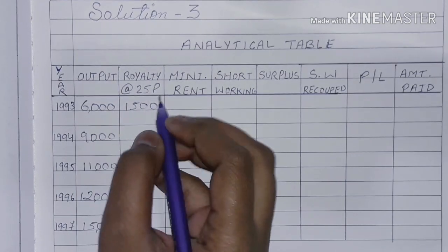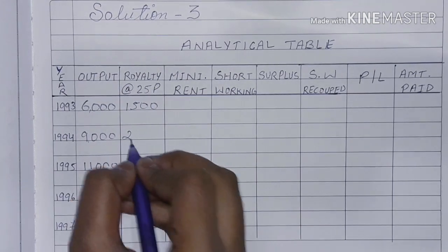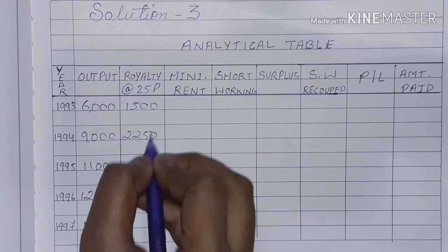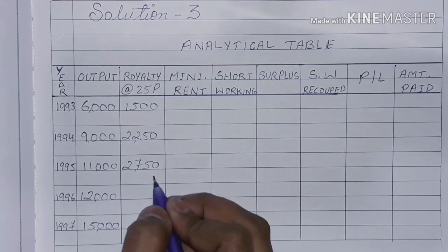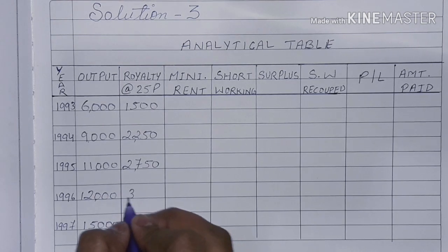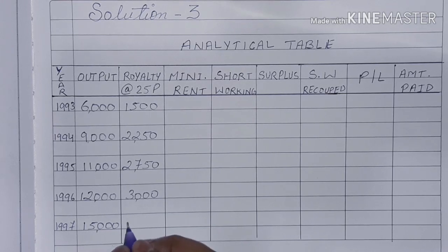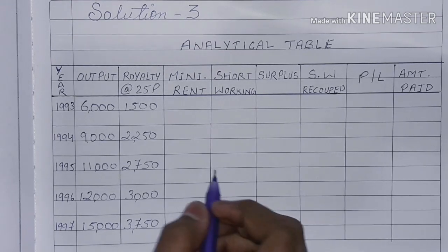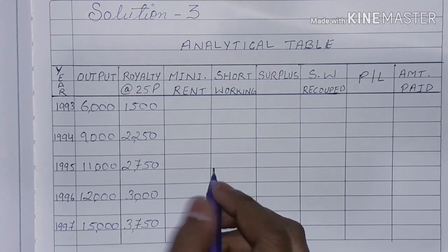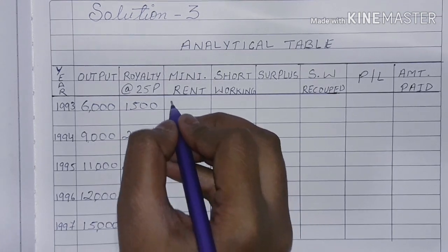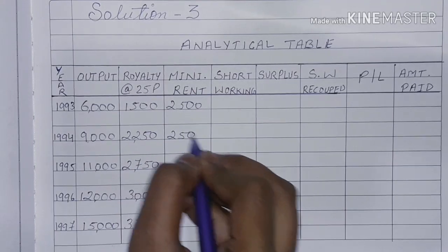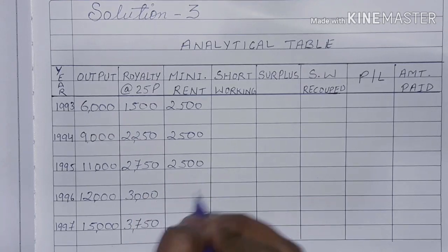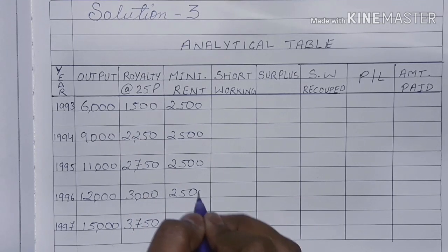Royalty for 1993: $1,500. Then 9,000 gives $2,250. Then 11,000 gives $2,750. Then 12,000 gives $3,000. Then 15,000 gives $3,750. All of us have written the minimum rent column. The minimum rent values are $2,500 each year.